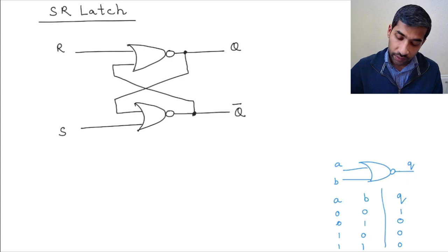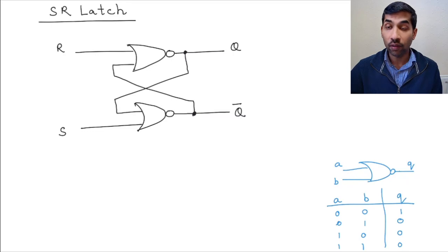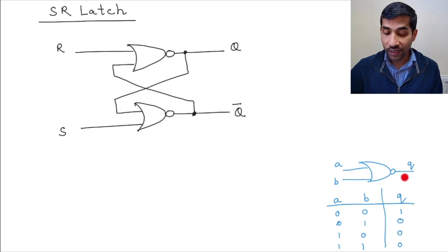So the idea is that if any one of the inputs of the NOR gate, either A or B is 1 or both are 1, then Q is 0. So only if both of them are 0, only in that condition will Q be equal to 1. And that kind of helps us in thinking through how this latch works.